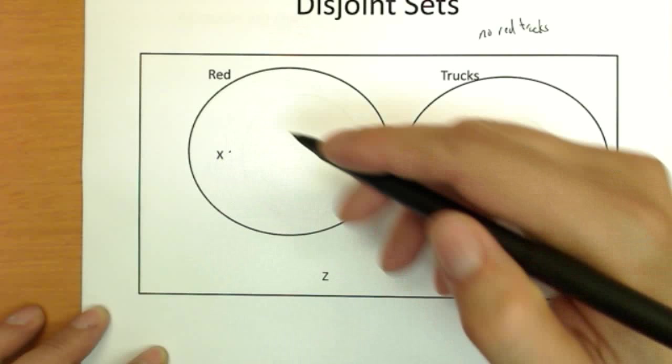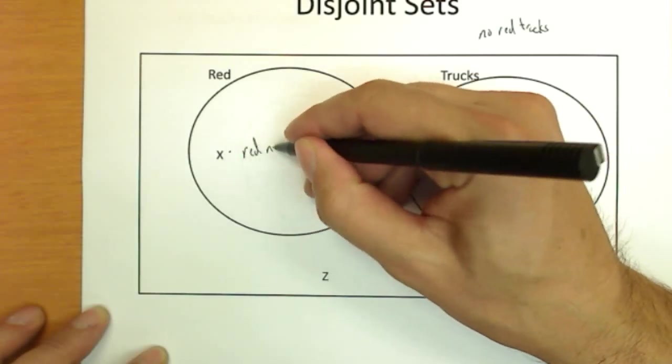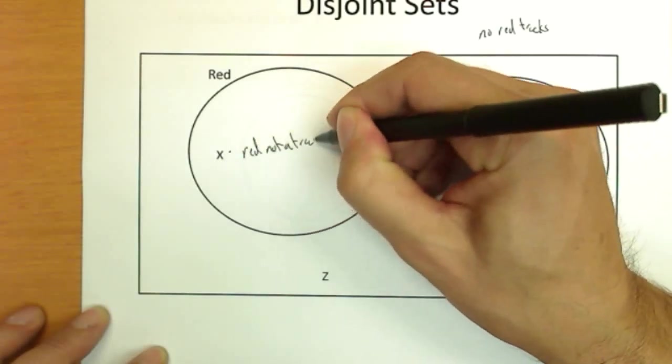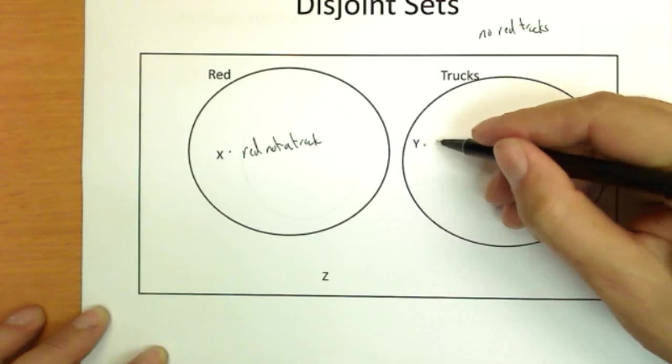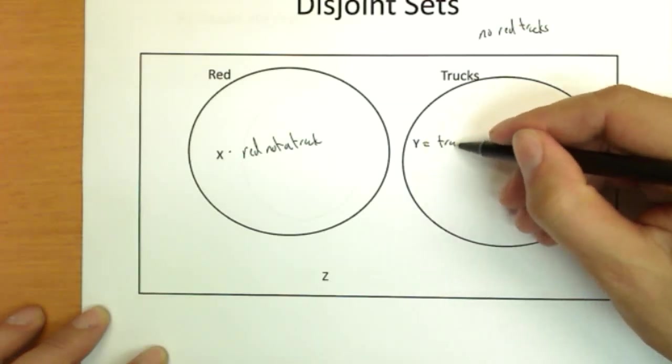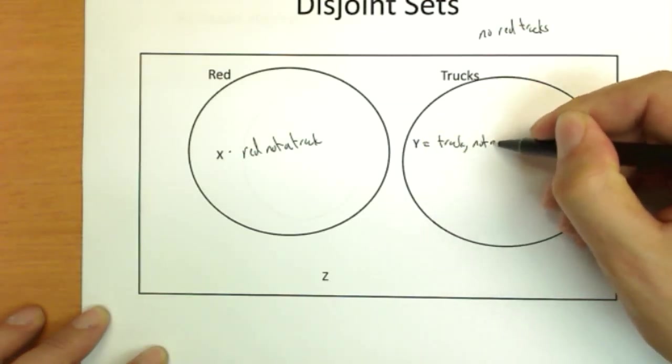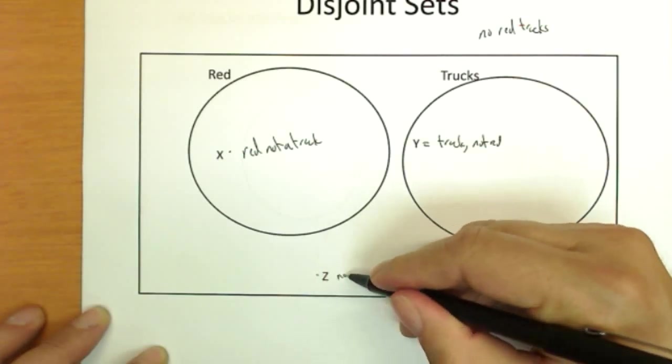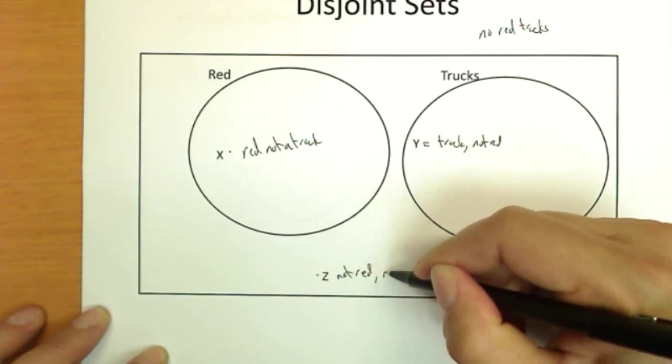This is a red vehicle and not a truck. This is a truck, not red. This is not red, and it's also not a truck.